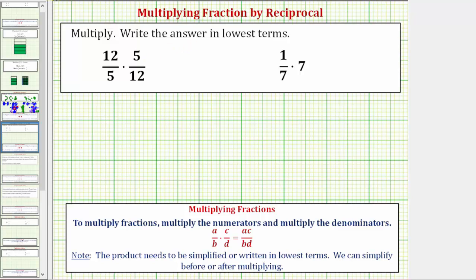We're going to multiply and write the answer in lowest terms. First we have 12 fifths times 5 twelfths.